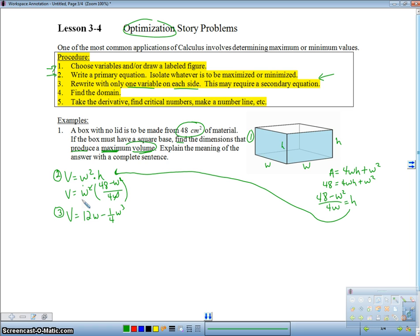Now I have my equation with one variable on each side. Now I need to do step four, which is find the domain. So the domain, you're thinking to yourself, well, this is a polynomial, the domain's all real numbers. Well, you know what? You've got to be careful with optimization problems because you've got to live in the real world. And in the real world, we're never going to have negative volume, right? We're not going to have negative amounts of stuff. In fact, we don't have negative width, right? Width is our independent variable. We're not going to have negative width. So we do have a domain restriction.